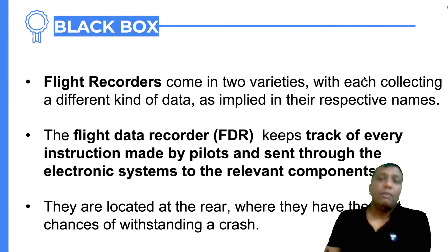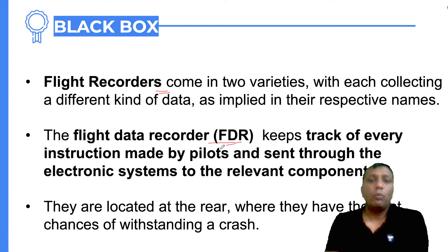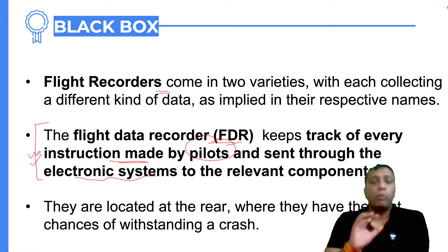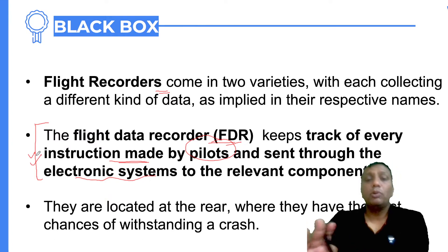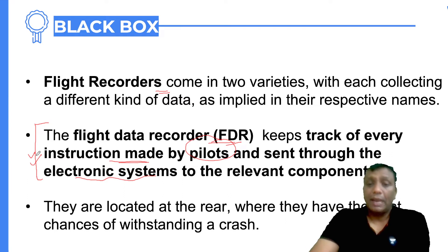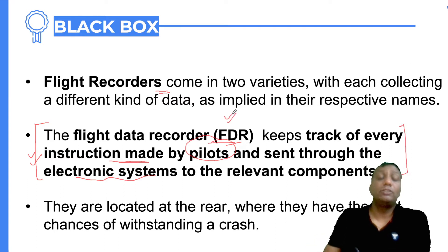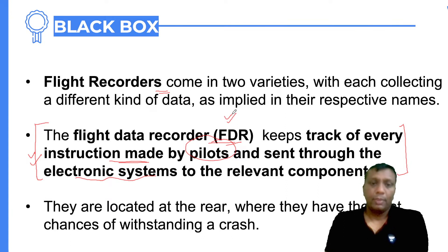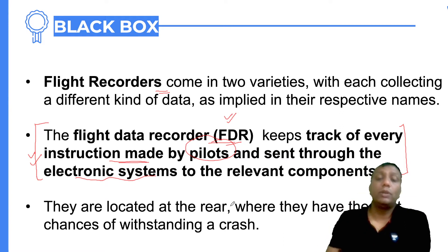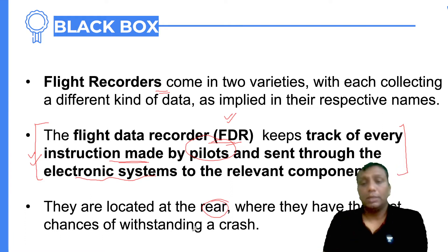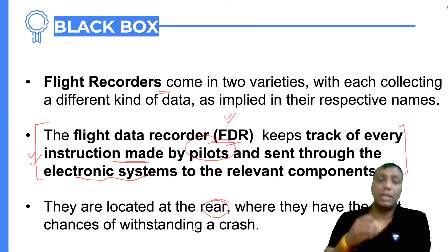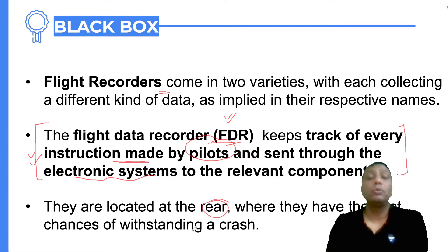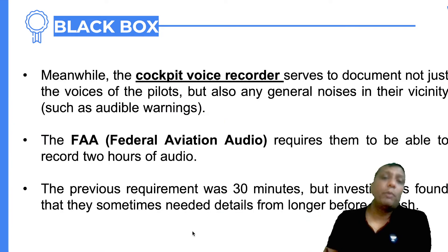The Flight Data Recorder records each and every moment in time — what pilot instructions were being carried out through the electronic system, what the condition of the flight was, what the speed of the flight was, and what electronic systems were being operated by the pilot. Every piece of information is collected under the Flight Data Recorder, and through it we can find out the condition of the flight. This recorder is generally located toward the rear of the aircraft.